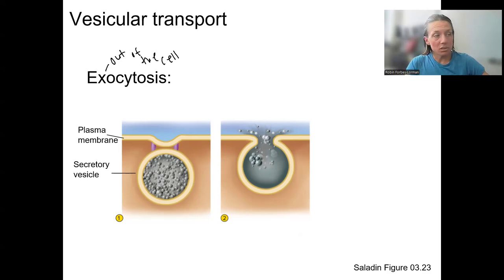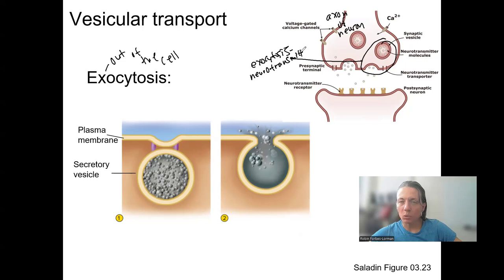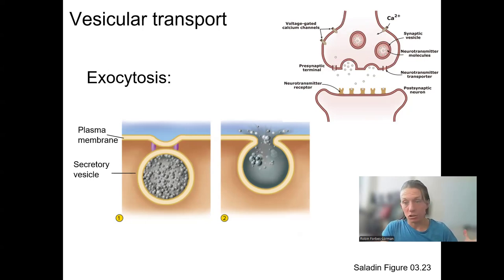The example we'll see most closely in this class is neurotransmitter release. So this is an axon of a neuron. And here you can see exocytosis of neurotransmitter. Neurotransmitter then can signal a different cell. So exocytosis is what's happening here for neurotransmitter release. Neurotransmitters are not large, but we want a whole lot to be released at once. So this is a useful mechanism. Other things that are exocytosis might be larger than neurotransmitters.